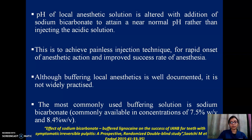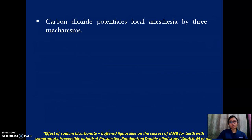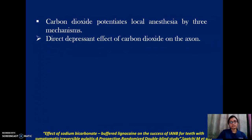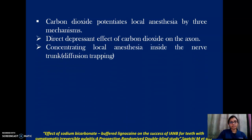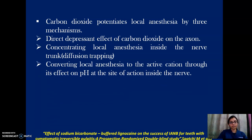Although buffering of local anesthetics is well documented and proven effective in many studies, it is not widely accepted. Buffering is advantageous as it alters local tissue pH to an alkaline environment, increases the bioavailability of base molecules at the site of injection, and also produces carbon dioxide and water. Carbon dioxide potentiates local anesthesia by three mechanisms: direct effect on the axon, concentrating local anesthetic inside the nerve trunk, and converting it to the active cation through its effect on pH inside the nerve.